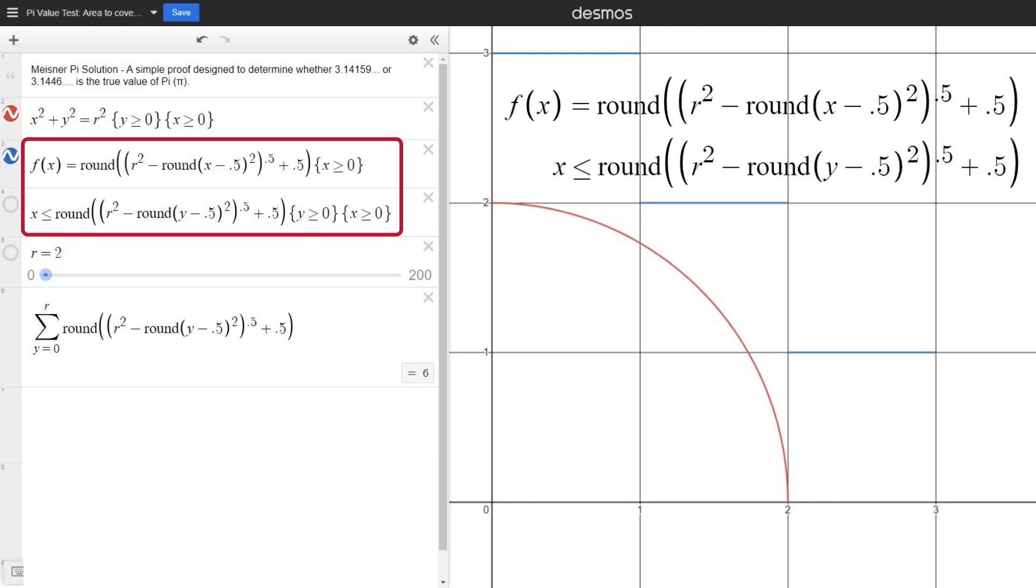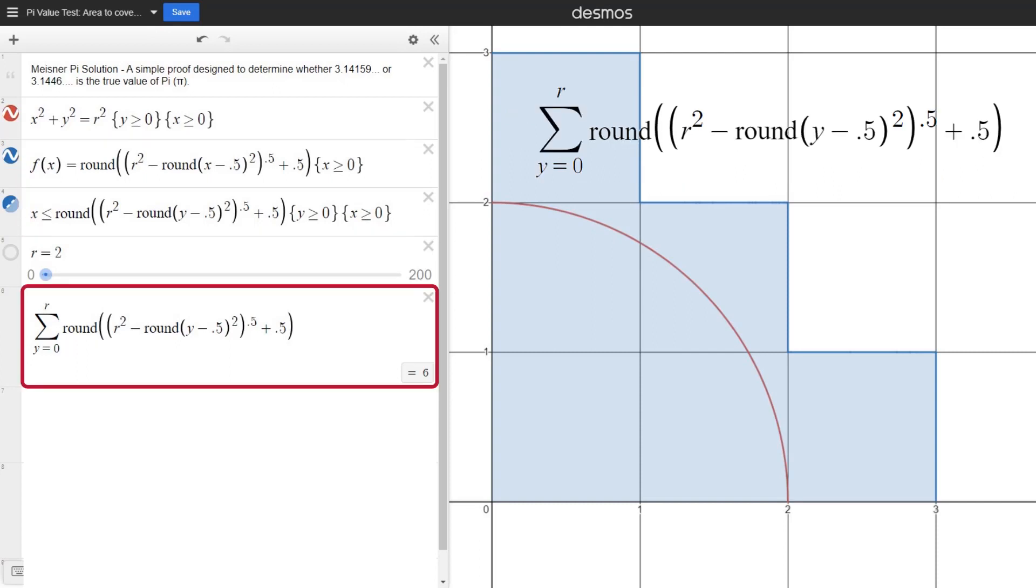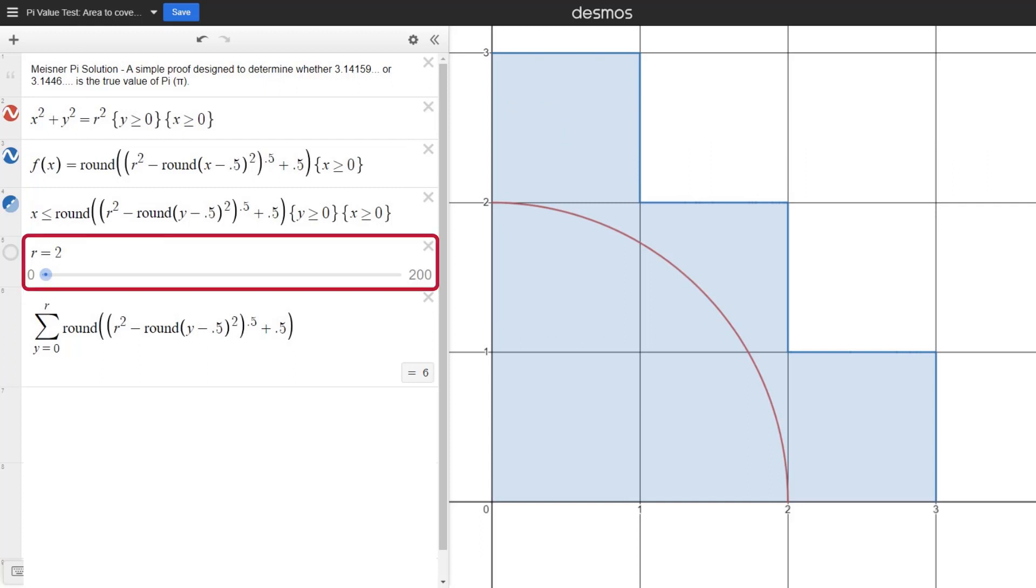The next two formulas create a blue line that shows the full squares required to completely cover the quarter circle. The summation formula counts the number of full squares enclosed by the blue line. Next, there's a slider to change the radius r.